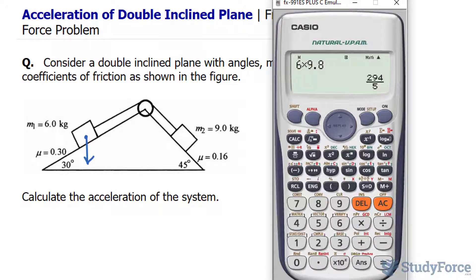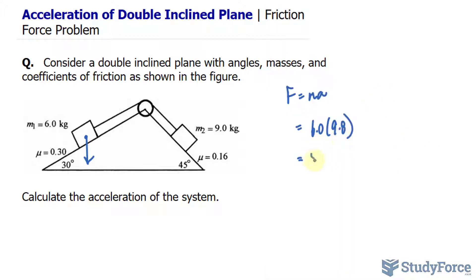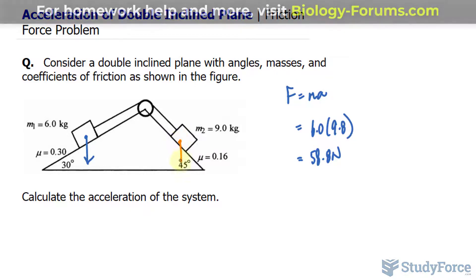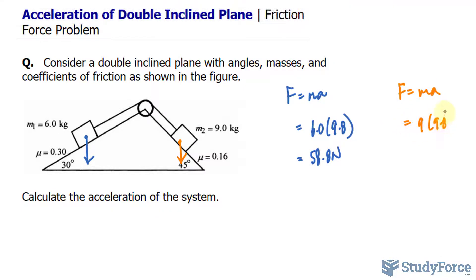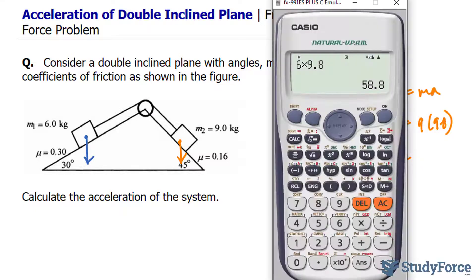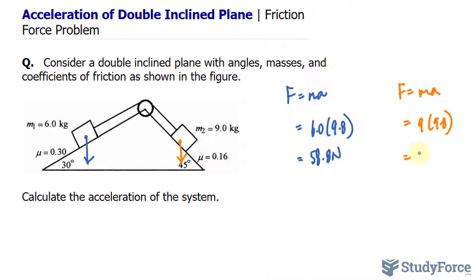I'll do the same thing for this one. I'll use the color orange. So I have F equals ma, 9 times 9.8, and that gives us 88.2 newtons.